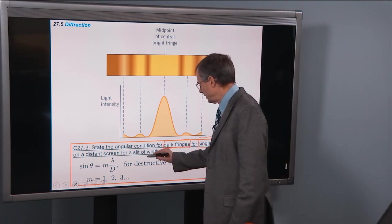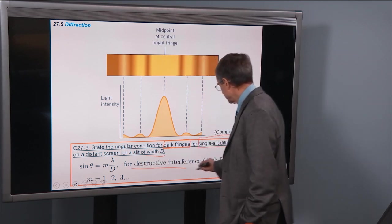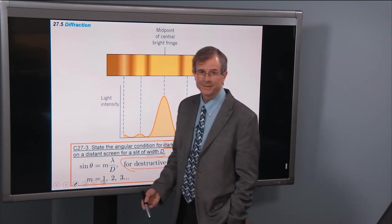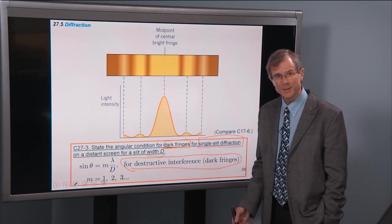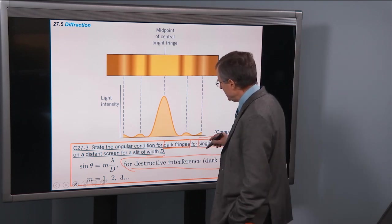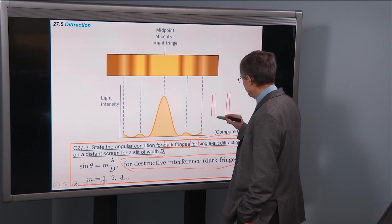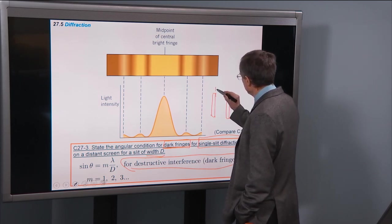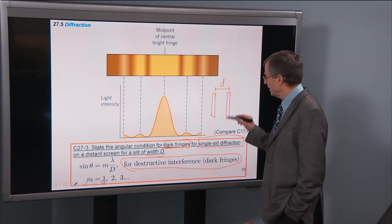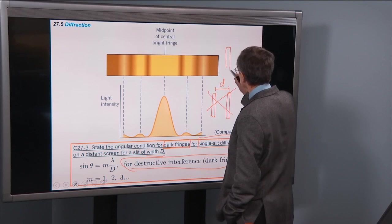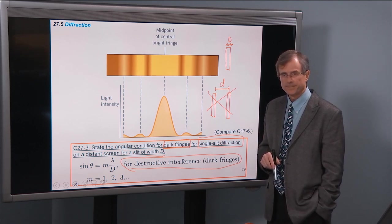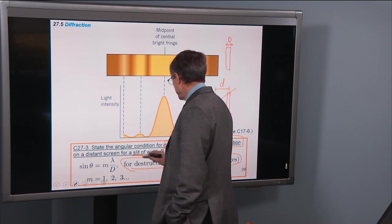And it's a slit of width d. What you get for destructive interference and these dark fringes that I told you that we're going to focus on is m times lambda over d. It looks like the condition for constructive interference for a two slit pattern. But a couple of things are different here. Instead of d, in the case of the double slit, little d was the separation between the two slits. Now, we don't have two slits, we just have a single slit. And capital D represents the width of that slit.